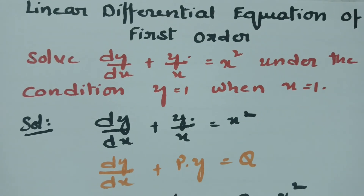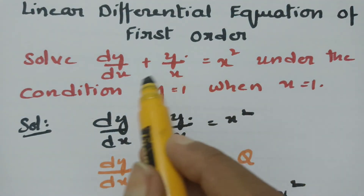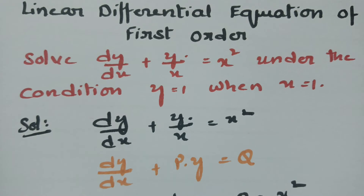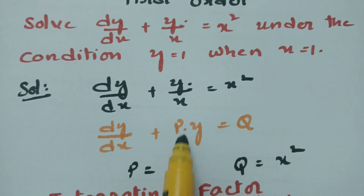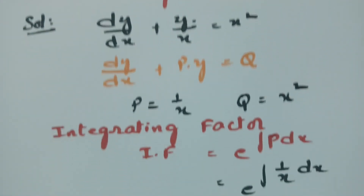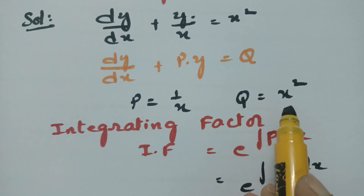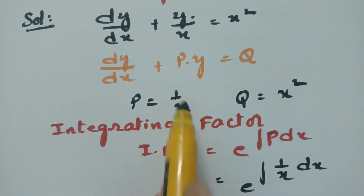Let me explain once again. What is given: we have to solve dy/dx plus y/x equals x squared. This is clearly a linear differential equation of the form dy/dx plus py equals q. Comparing these two equations, p equals 1/x and q equals x squared.